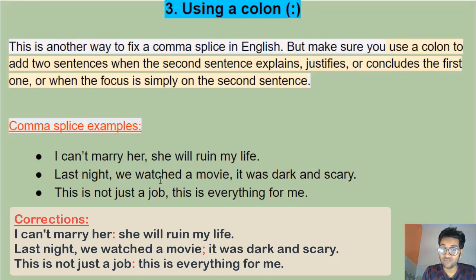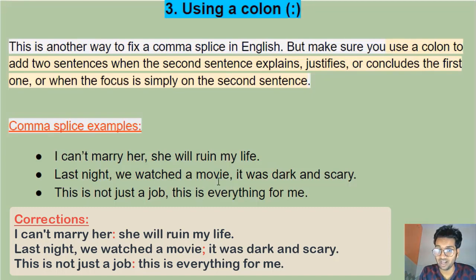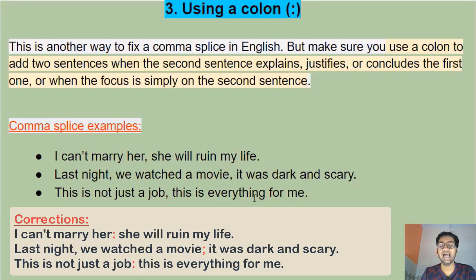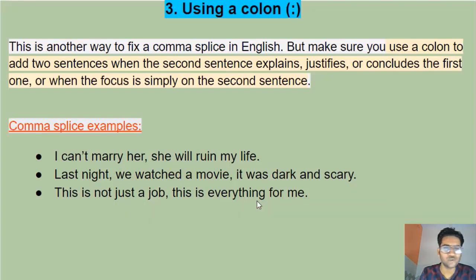'Last night we watched a movie: it was dark and scary' — here the second part gives information about the movie, but I would personally prefer a semicolon. A colon is not very common and can break the flow, so don't overuse it. 'This is not just a job: this is everything for me' works well with a colon because the second sentence explains and concludes the first.